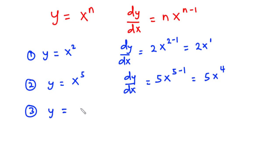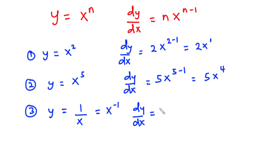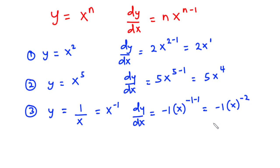Given that y is equal to 1 over x. Now, according to indices, 1 over x is the same as x exponent negative 1. So the derivative of y with respect to x: we drop down negative 1, maintain x, and reduce the exponent by 1. This becomes negative 1 times x exponent negative 2, which from indices becomes negative 1 over x squared.